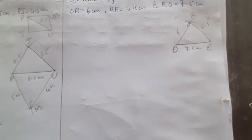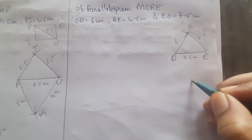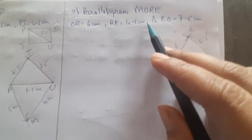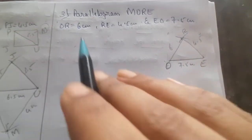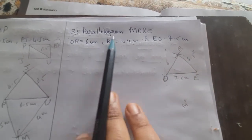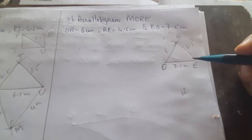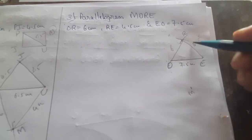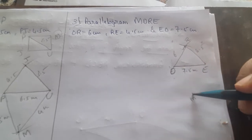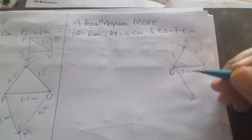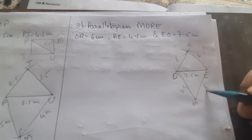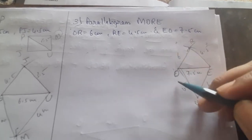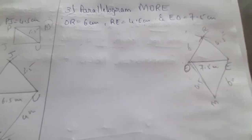Now we should make it a parallelogram, but we don't know what is M. Vertex M should come here. For parallelogram M-O-R-E, do we know what is O-M? No. Do we know what is M-E? No, we don't know. But we know the opposite sides of the parallelogram are equal. Using that property, for side R-E the opposite side M-O should be 4.5 cm, and opposite to side R-O is M-E which is 6 cm. Hence we get M-O-R-E as the required parallelogram.